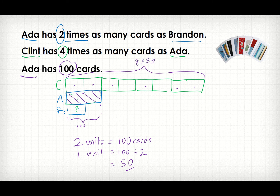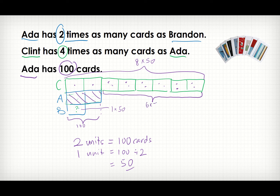If they ask how many cards does Brandon have? Brandon has one unit, so that's one times 50, which is 50. How many more cards does Clint have than Ada? That's the difference — six units — six times 50. I believe you get the idea. Let's try another question.